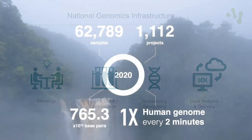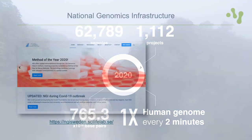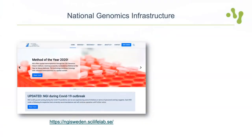Just to give a hint of our capacity: last year we processed over 1,000 projects containing more than 60,000 samples. This generated in total 765 terabase pairs, which is approximately equivalent to producing one X coverage of a human genome every second minute. Please have a look at our website to find out more on different library preparation and sequencing options as well as pricing information.